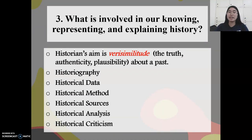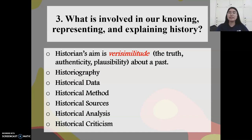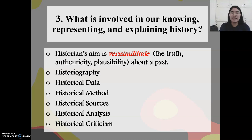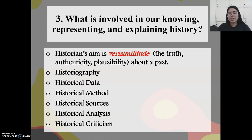What is involved in our knowing, representing, and explaining history? The historian's aim is to achieve verisimilitude — the truth, authentic and plausible about the past. This includes historiography, writing about history, as well as gathering historical data, having also a historical method — the different steps and methodologies in arriving at or searching for historical knowledge. In order to have a method, they need to have a source of evidence. This comes in two forms: the primary source as well as the secondary source. They also analyze the historical data gathered and apply historical criticism to see if what they got is authentic, plausible, and true.